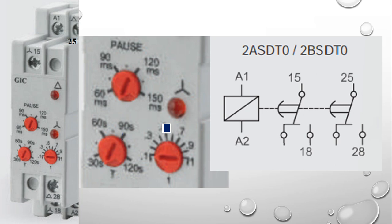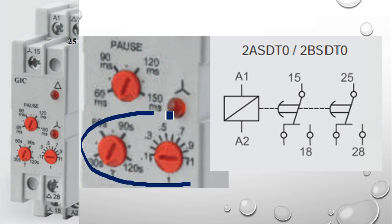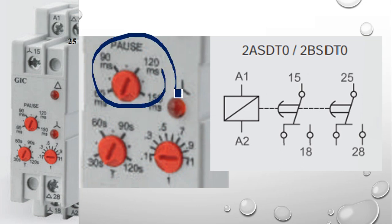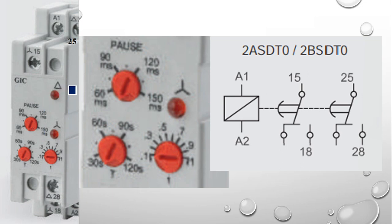For the minimum time, setting T to 30 seconds and t to 0.1 gives 3 seconds — the minimum timing for this relay. There is also a pause timing setting at the top for the time delay between star and delta changeover: options are 60 ms, 90 ms, 120 ms, or 150 ms. The front panel also has star and delta indication LEDs — the star LED lights when running in star, and the delta LED lights when running in delta.